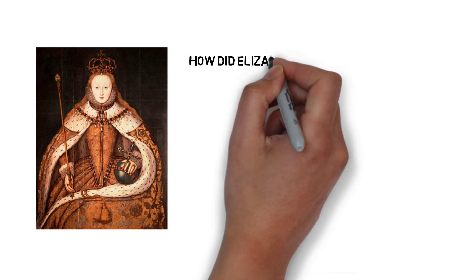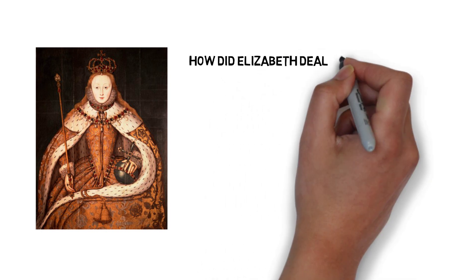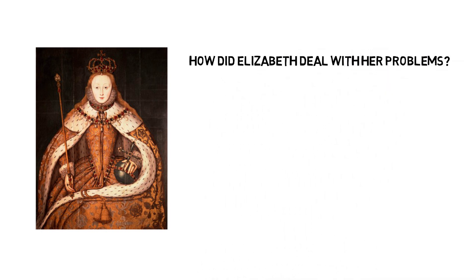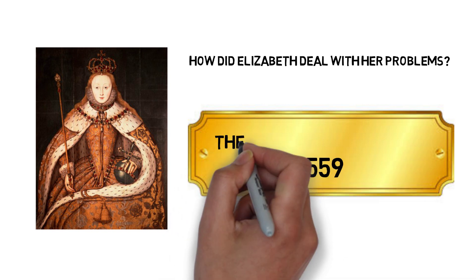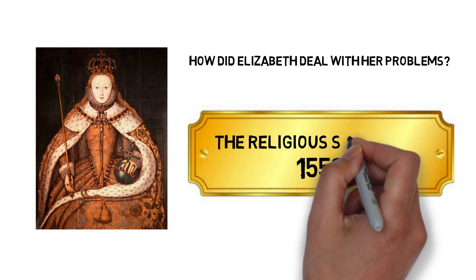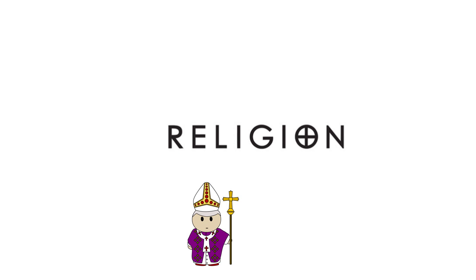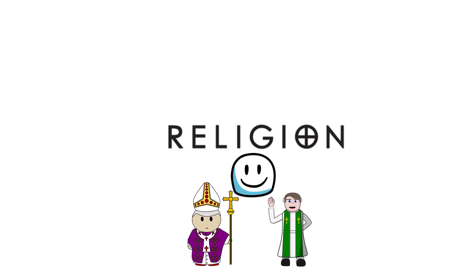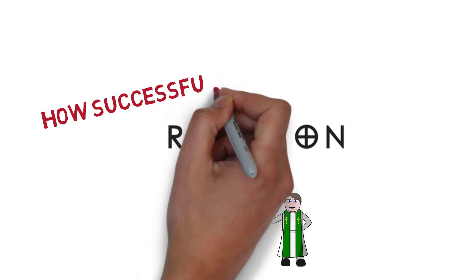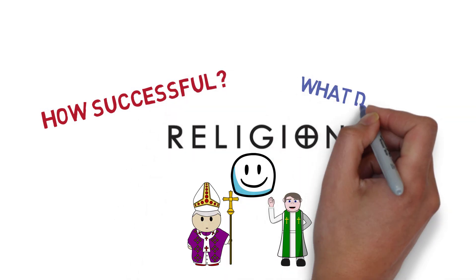Hi everybody, welcome back to the History Teacher. We're still in Elizabethan England, but this time we've moved forward a little bit to 1559. We're going to look today at Elizabeth's religious settlement. The idea behind this settlement was that she wanted to make a religion that would suit both Catholics and Protestants — that everybody would be happy with.